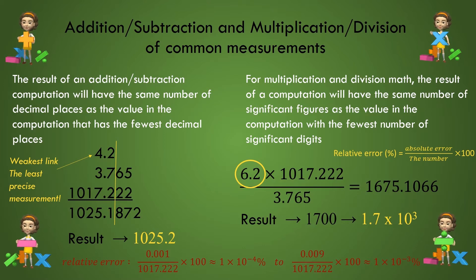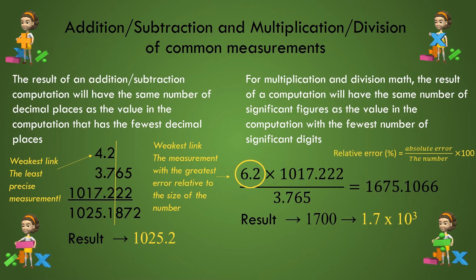Now here is the point. In multiplication and division, the number with the greatest relative error is the weakest link in the measurement and the computational chain. The number with the smallest number of sig figs is assumed to be the number with the greatest relative error. So it will be this number that dictates the error and will determine where we must round off our final value in a multiplication and division computation.